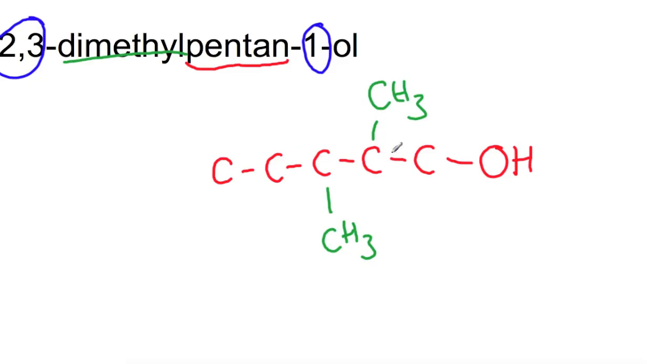I'm just going to go ahead and fill in the rest of the hydrogens. So remember each carbon needs to have four bonds coming out of it. So draw in the structure and then go around and fill in the rest at the end. So here you have two, three, dimethyl, pentan, one ol.